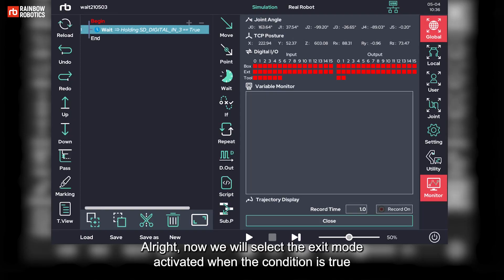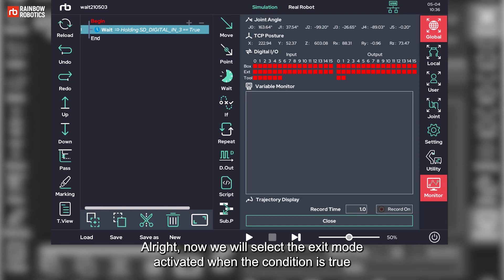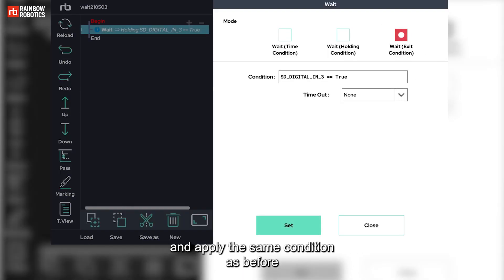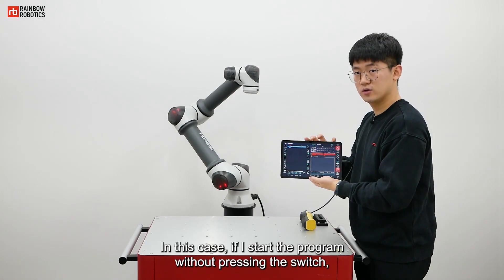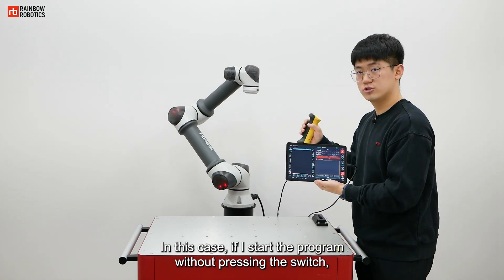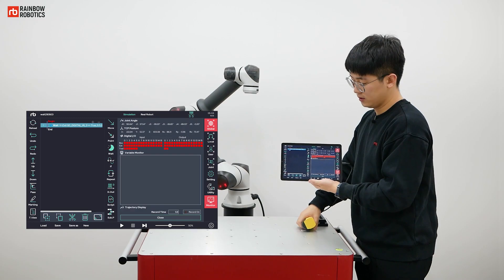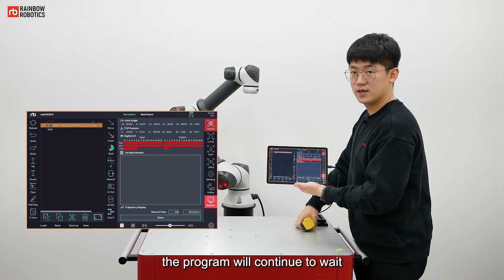Alright, now we will select the exit mode activated when the condition is true and apply the same condition as before. In this case, if I start the program without pressing the switch, the program will continue to wait.